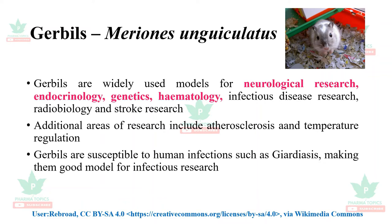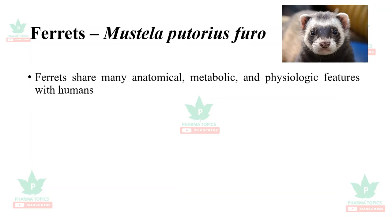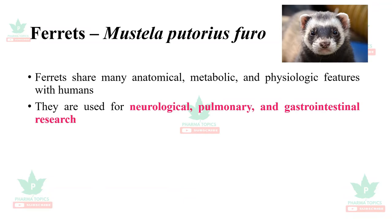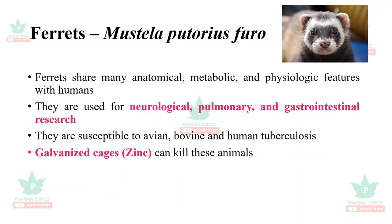Ferrets, Mustela putorius furo, share many anatomical, metabolic, and physiological features with humans. They are used for neurological, pulmonary, and gastrointestinal research and are susceptible to avian, bovine, and human tuberculosis. Galvanized — zinc — cages can kill these animals. Reye's syndrome is induced with human influenza, aspirin, and an arginine-deficient diet.